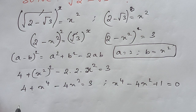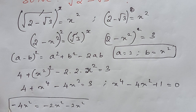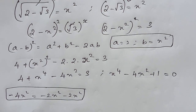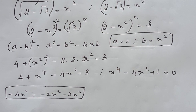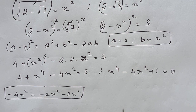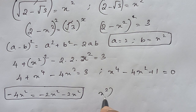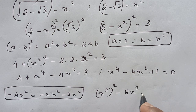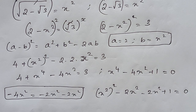The minus 4x squared we can write as minus 2x squared minus 2x squared. So splitting this: x squared the whole squared minus 2x squared minus 2x squared plus 1 is equal to 0.